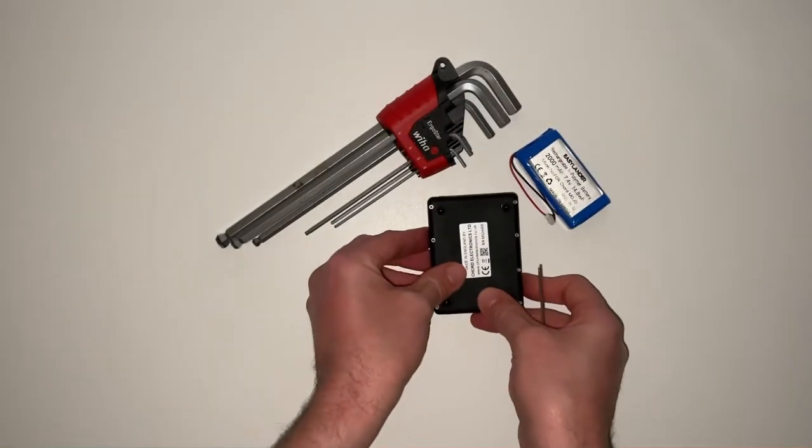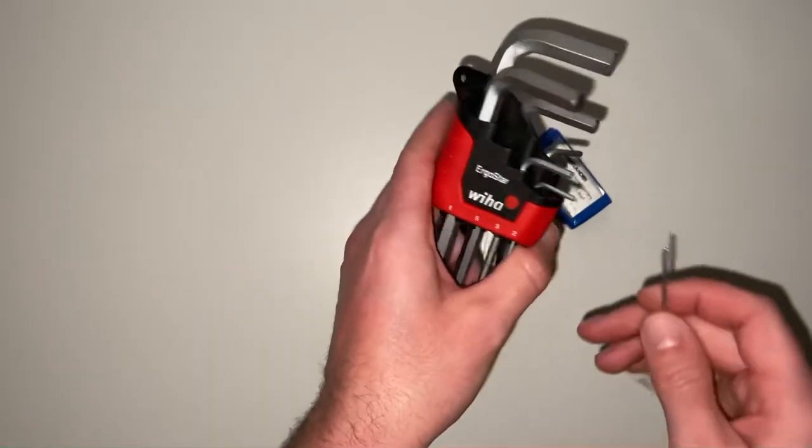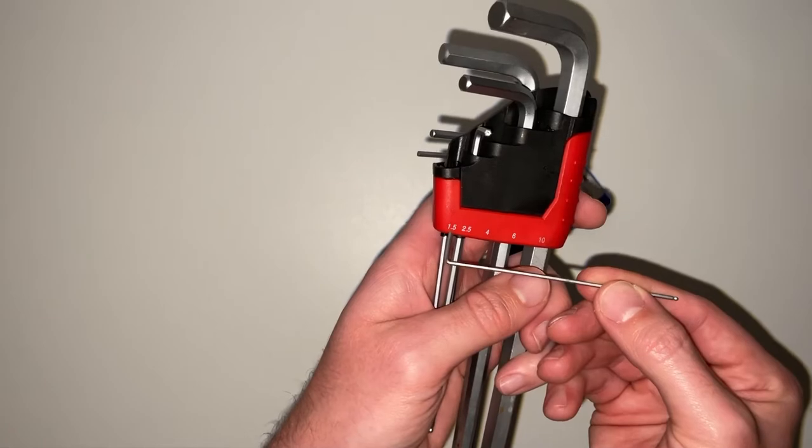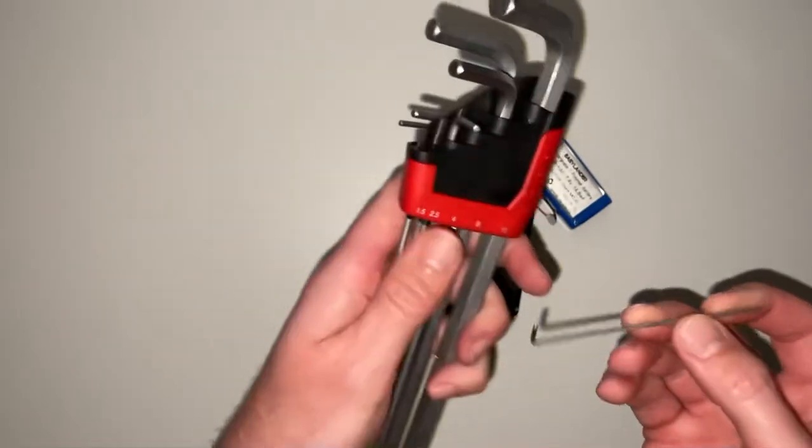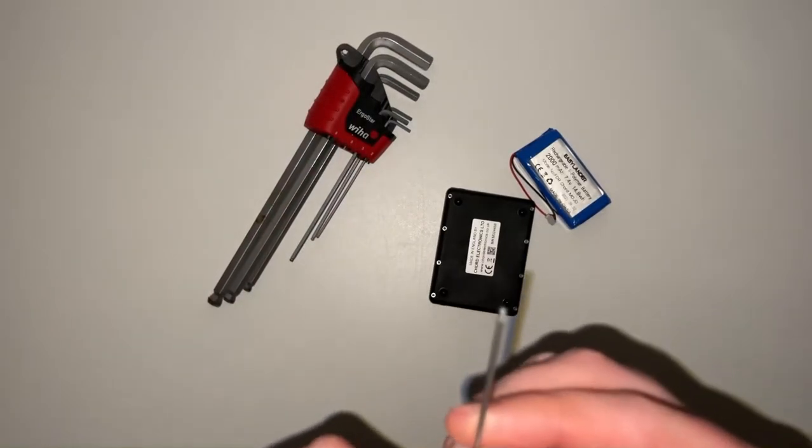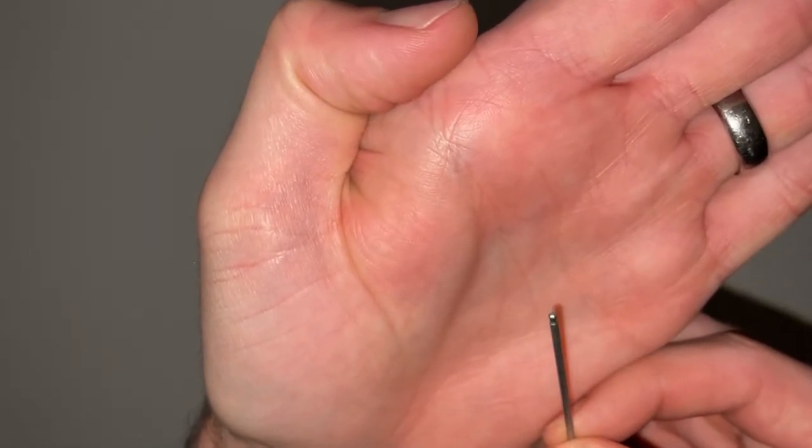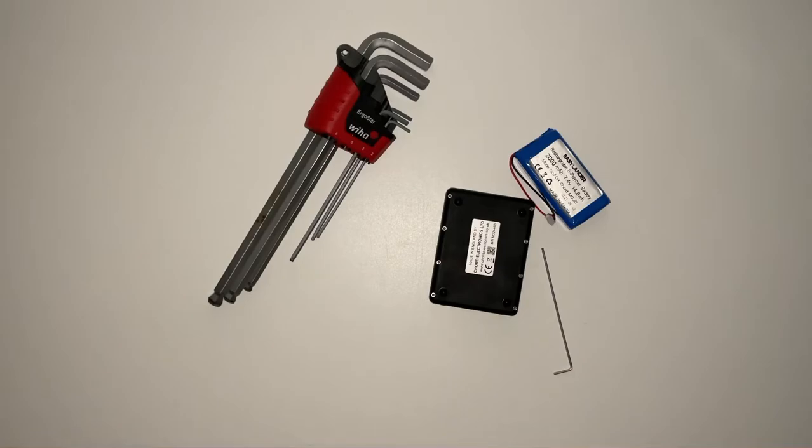I should have said beforehand, the allen keys I've used are these Wera Ergosums. The tool size that you need is very small, it's a 1.5mm. It's not always included in some other sets of hex keys, so just make sure that if you're doing it you get one with the 1.5mm hex. Also, as you see on the end of these, it's actually a ball head even on something that's this small.